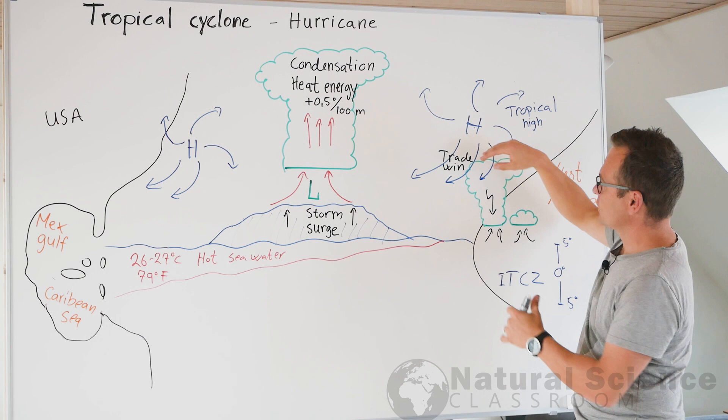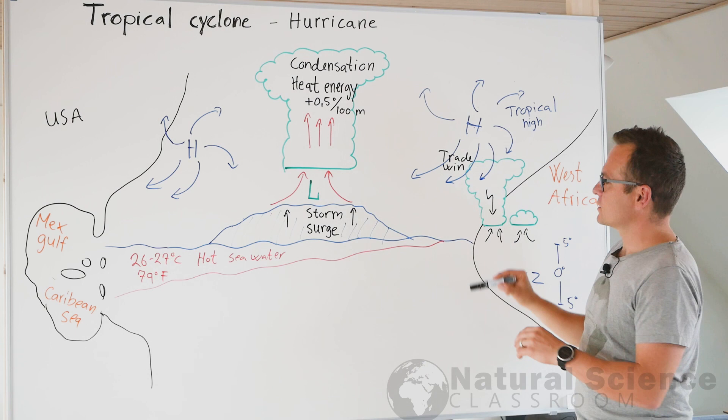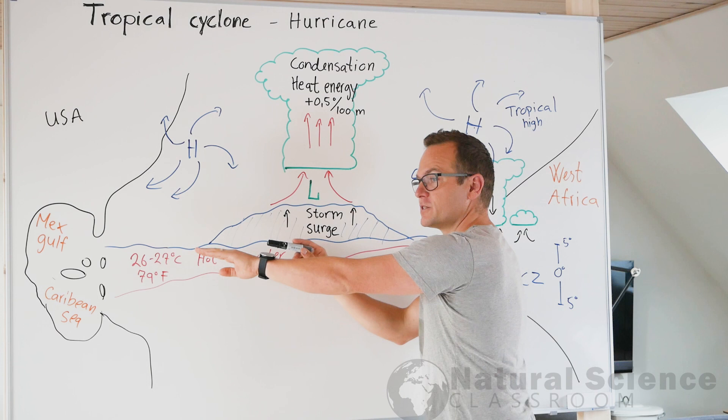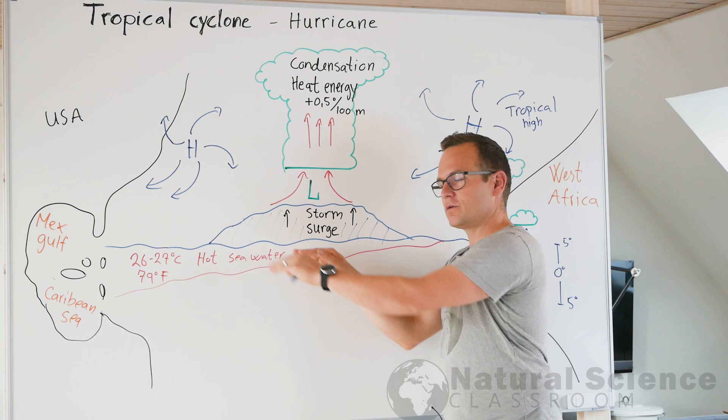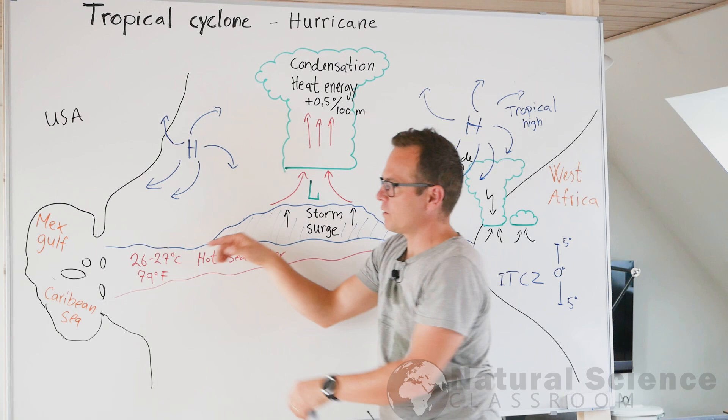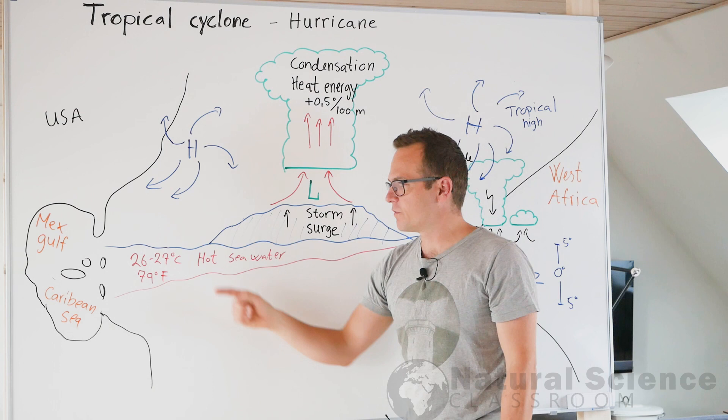These trade winds will then pull out the thunderclouds. The trade winds also cause the surface water to go in the same direction. The surface of the seawater has been heated up by the sun, and this heated seawater will then go west. We have like this wedge of hot water in the Western direction, so the seawater will get warmer and warmer the further west we get.